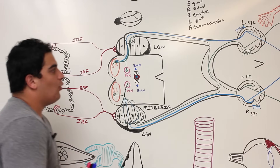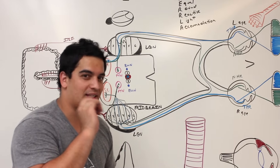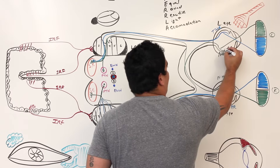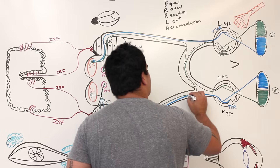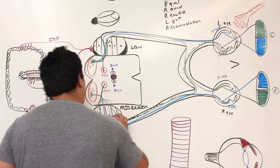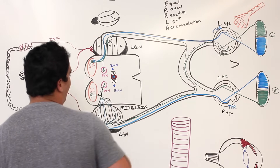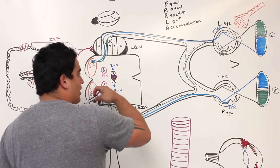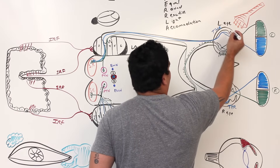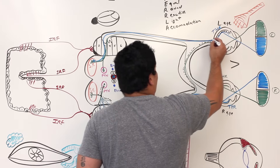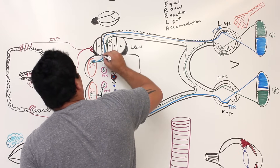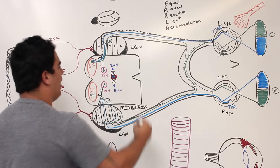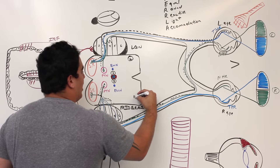Here's what's really important: when we shine light into the left eye, the nasal hemiretina fibers cross contralaterally to the right pretectal nucleus, while the temporal hemiretina fibers travel ipsilaterally to the left pretectal nucleus. This means both the left and right pretectal nuclei get activated from a single illuminated eye.